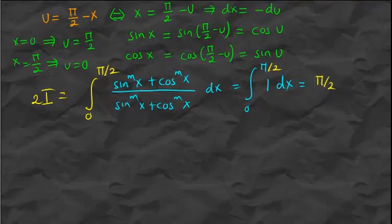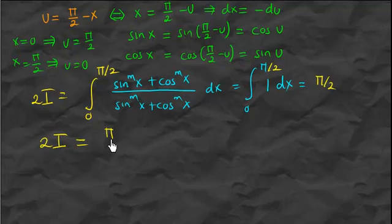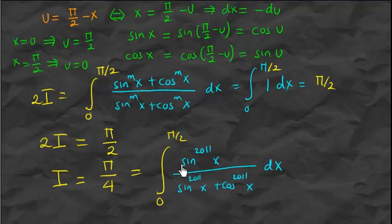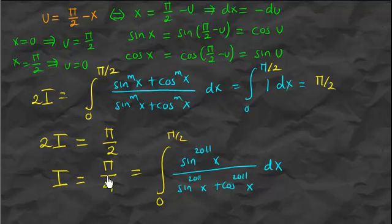So twice I equals pi over 2, therefore I itself equals pi over 4. This result holds for any m. In particular, it is true for m equals 2011. So the integral of sine to the 2011 of x over sine to the 2011 of x plus cosine to the 2011 of x from 0 to pi over 2 equals pi over 4. That's the integration by substitution method. See you later on another topic. Bye.